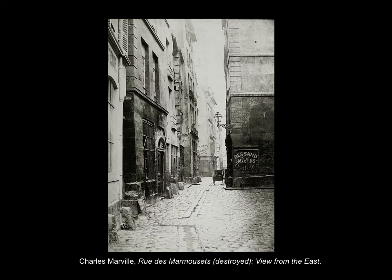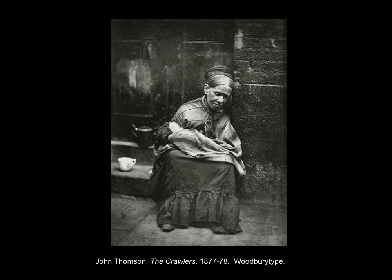Though not a social reformer himself, Annan's images provide some of the earliest comprehensive series of photographs of an urban slum — the very slum considered to be the worst in Great Britain. Similarly, in Paris, under the Baron Haussmann, Charles Marville was hired to document vast areas of old Paris that were torn down and rebuilt to create a more modern city of wider boulevards and open spaces.